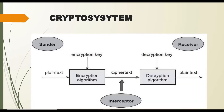Now let's move on to the crypto system. This whole picture represents the crypto system. It consists of a sender, a receiver, and an interceptor — an unauthorized person who is trying to see what is being sent. Let's say I am the sender and I am trying to send a message to my friend, who is the receiver. The message is sent through the internet, which is not a very secure channel, so any unauthorized person can see what I am sending.